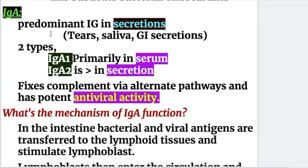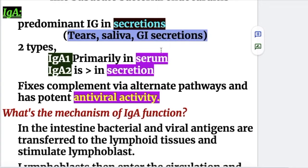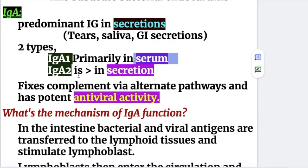Immunoglobulin A is the predominant immunoglobulin in secretions — for example, in tears, saliva, and GI and respiratory secretions. There are two types of IgA: IgA1, primarily found in the serum, and IgA2, primarily found in secretions. IgA2 is the dimer form. It fixes complement via the alternate pathway and has potent antiviral activity.